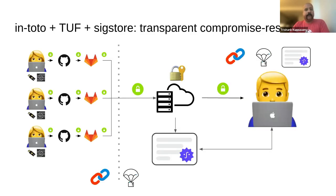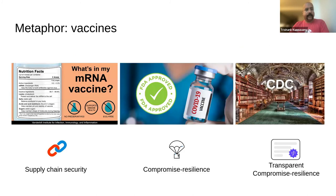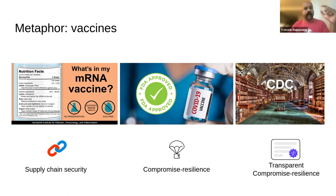Some conclusions. Too long, didn't read: just use In-toto, TUF, and Sigstore to get transparent and compromised resilience. In-toto is like Pfizer and Moderna telling you exactly how every vaccine was produced. TUF is like the FDA telling you why you should trust each vaccine maker in the first place — the bootstrapping of trust and secure distribution. And Sigstore is like the CDC, keeping a permanent transparent record for everybody who wants to check: how was my vaccine produced, from end to end?